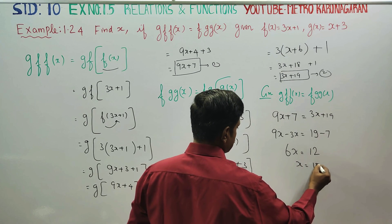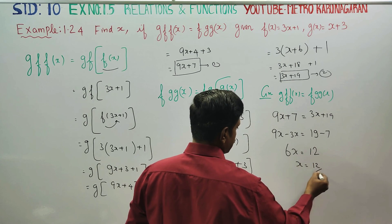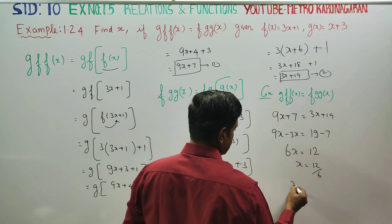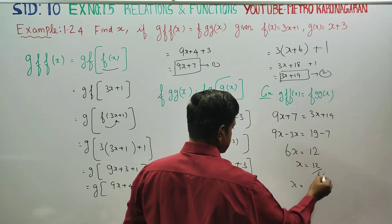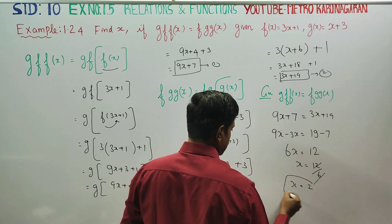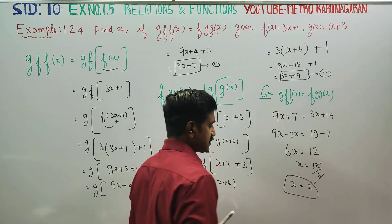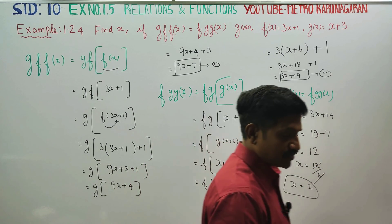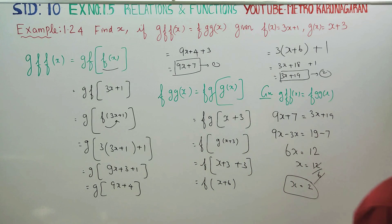x is equal to 12 divided by 6, that is 2 times. The final answer is x equals 2. Thank you.